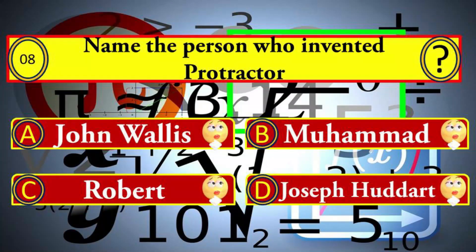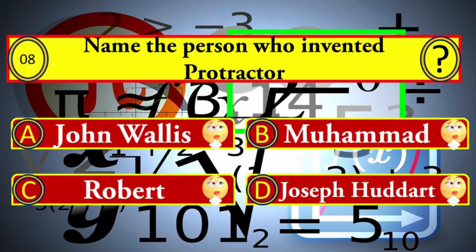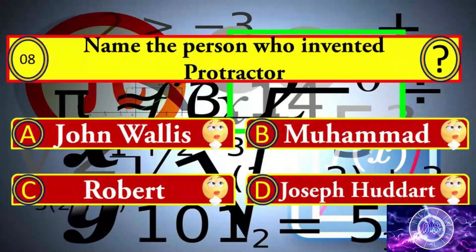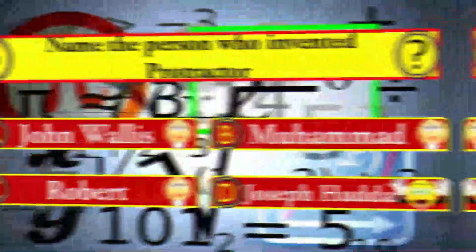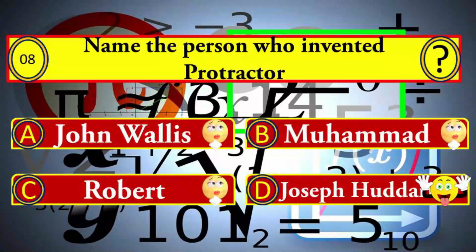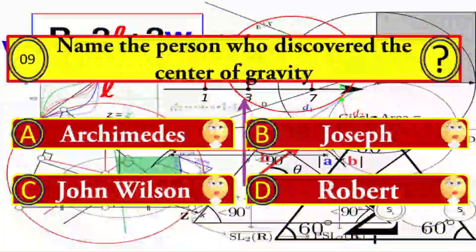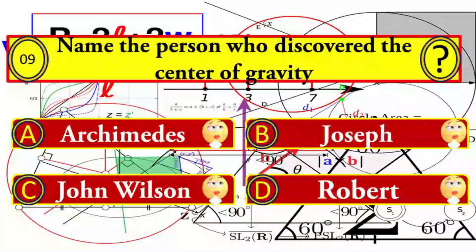Question number eight: name the person who invented the protractor. Your options: A) John Valise, B) Muhammad, C) Robert, and D) Joseph Rodent. Joseph Rodent is the right answer.